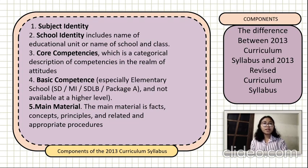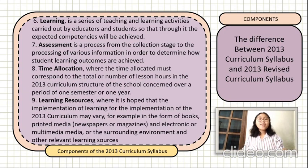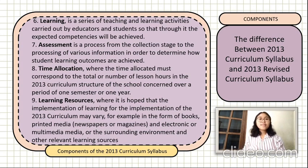Fifth, main material. The main material is facts, concepts, principles, and related and appropriate procedures, which are then written down in the form of items so that they are in accordance with the formulation of competency achievement indicators. Sixth, learning, which is a series of teaching and learning activities carried out by educators and students so that the expected competencies will be achieved. Seventh, assessment, which is a process from the collection stage to the processing of various information in order to determine how student learning outcomes are achieved.